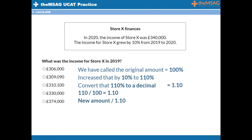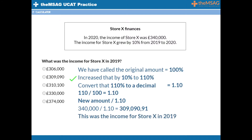In this question, we divide £340,000 by 1.10 to get £309,090.91. This was the income of Store X in 2019. If you want, you can check by increasing this amount by 10%, which will get you £340,000.